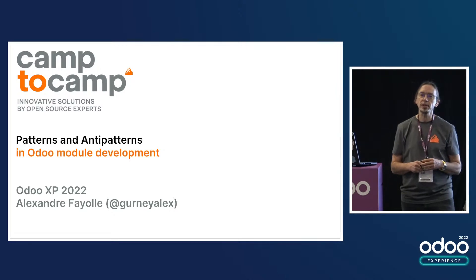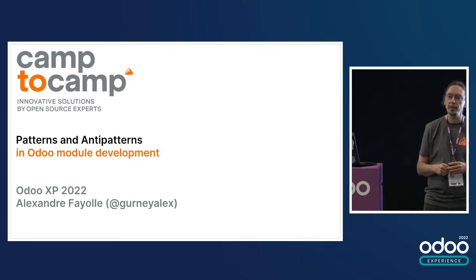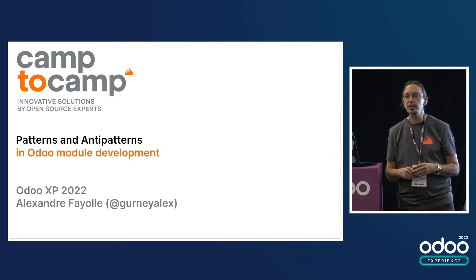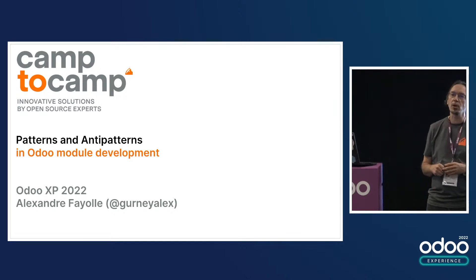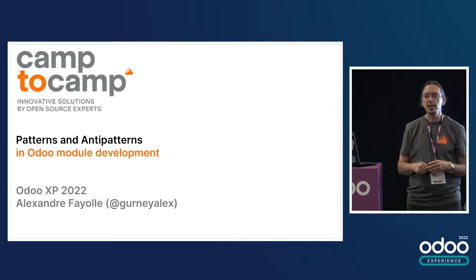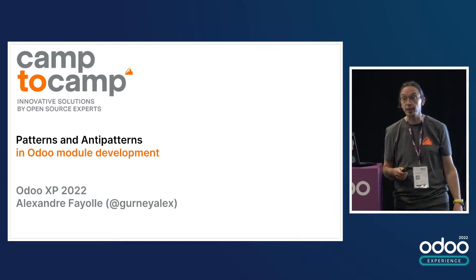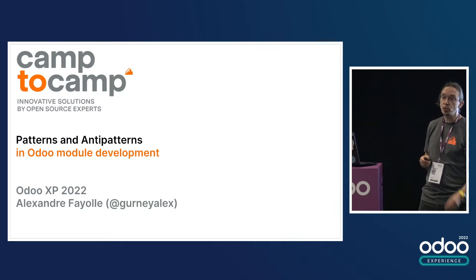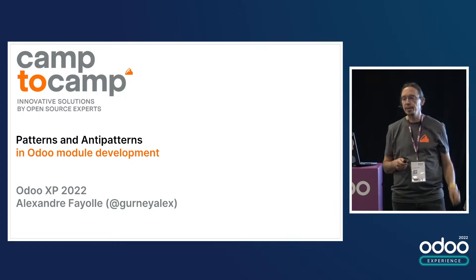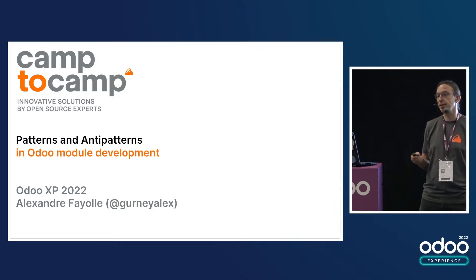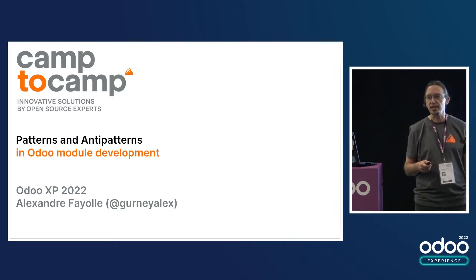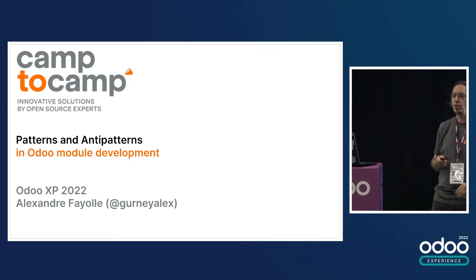My name is Alexandre. I'm working at Camp2Camp. You may know me as GurneyAlex on Twitter or on GitHub. I've been a software developer for the past 30 years and working with Odoo for the past 10 years. I'm here to talk to you about patterns and anti-patterns in Odoo module development because in the past 10 years, I've seen lots of things — things that I liked and things that I found awful — and I would like to share that with you.